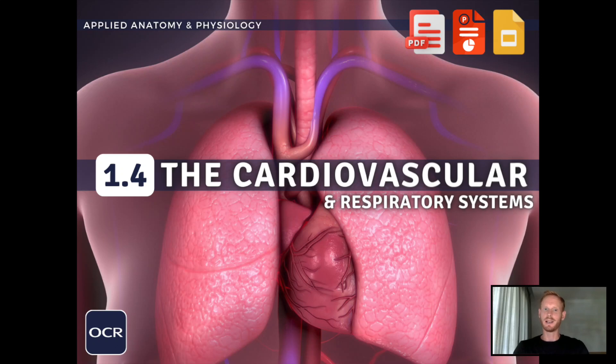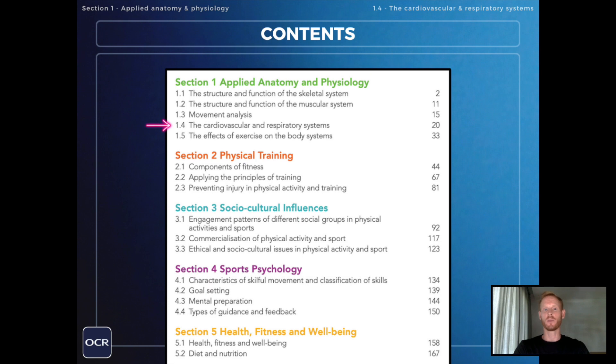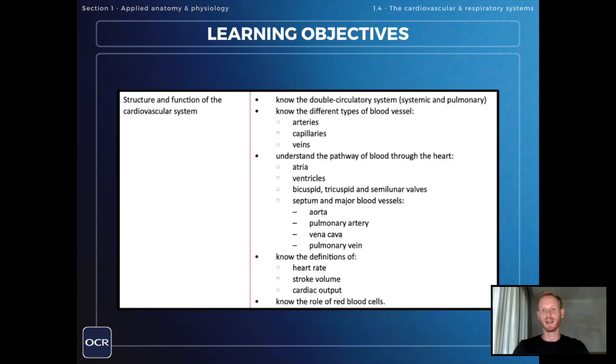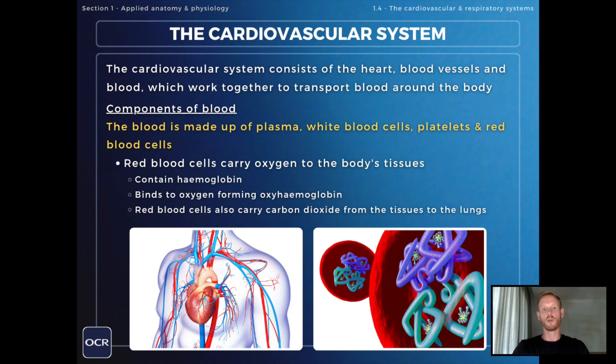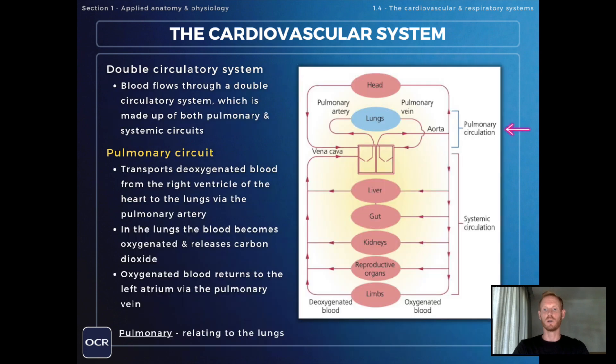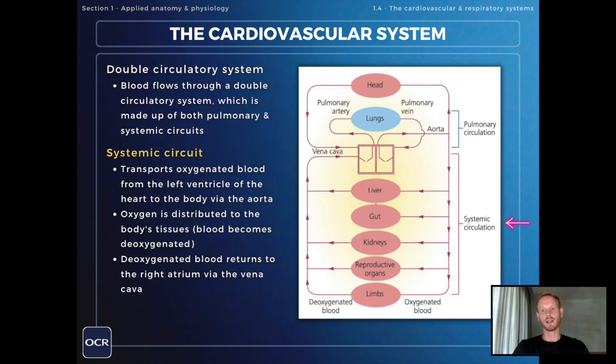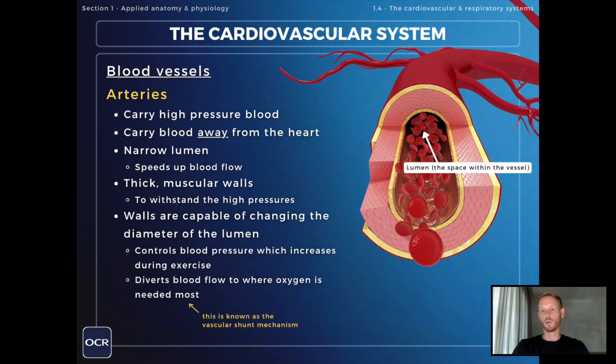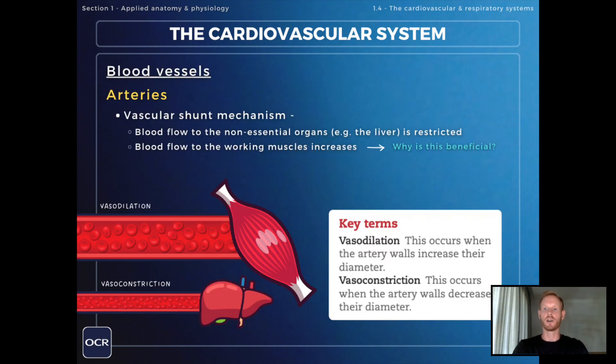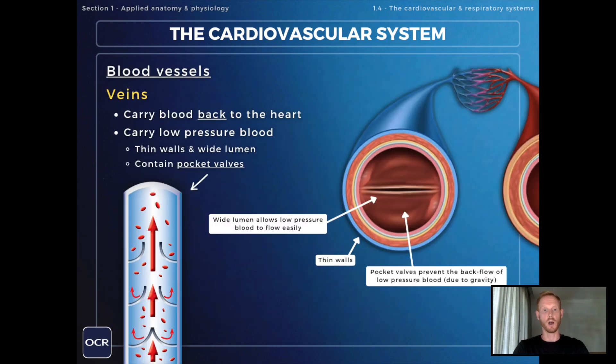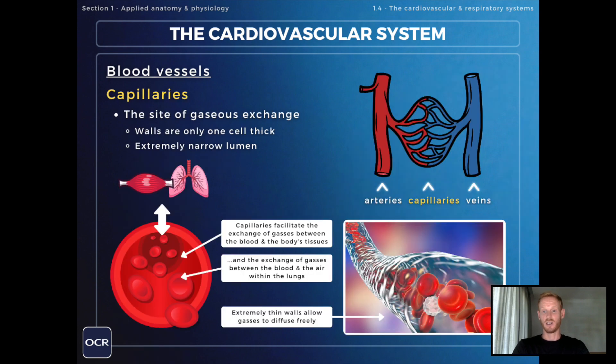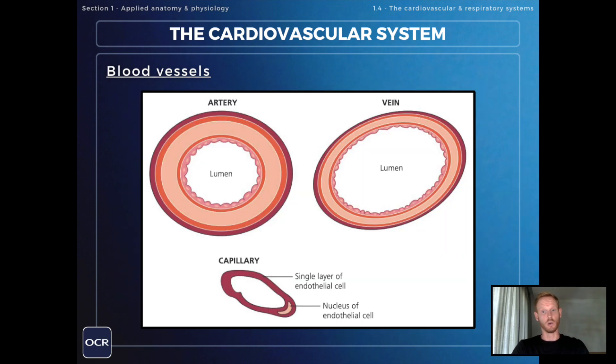Hello and welcome to another complete OCR GCSE PE lesson. In this one we'll be making a start on topic 1.4, the cardiovascular and respiratory systems, beginning with the first learning objective on the structure and function of the cardiovascular system. Now I've already made a video covering everything you need to know on this topic. I'll put a link to that one in the description, so we'll use this video to focus on how to apply that information to past exam questions, which is ultimately what will determine your grade.